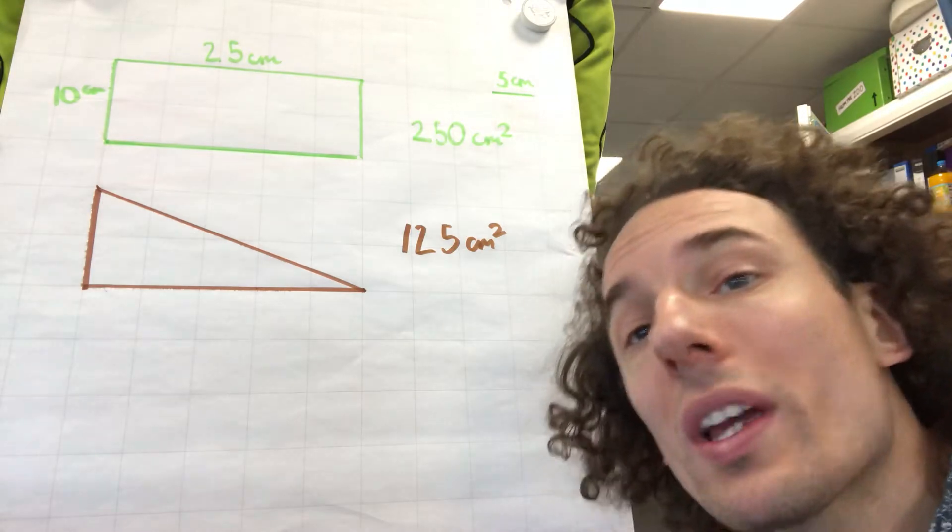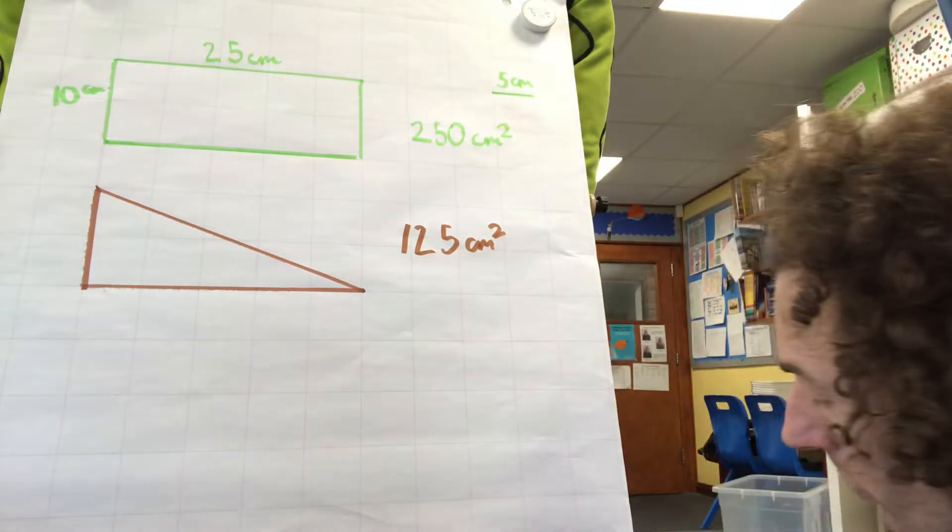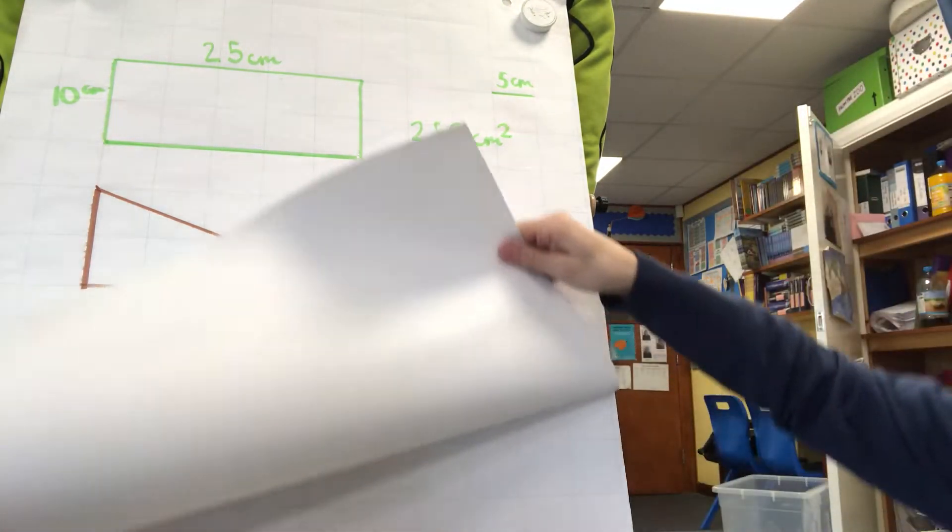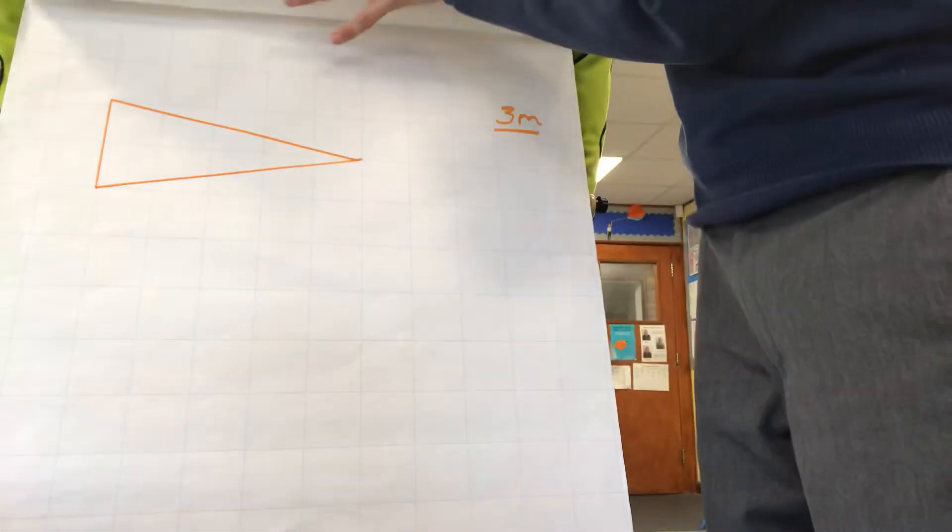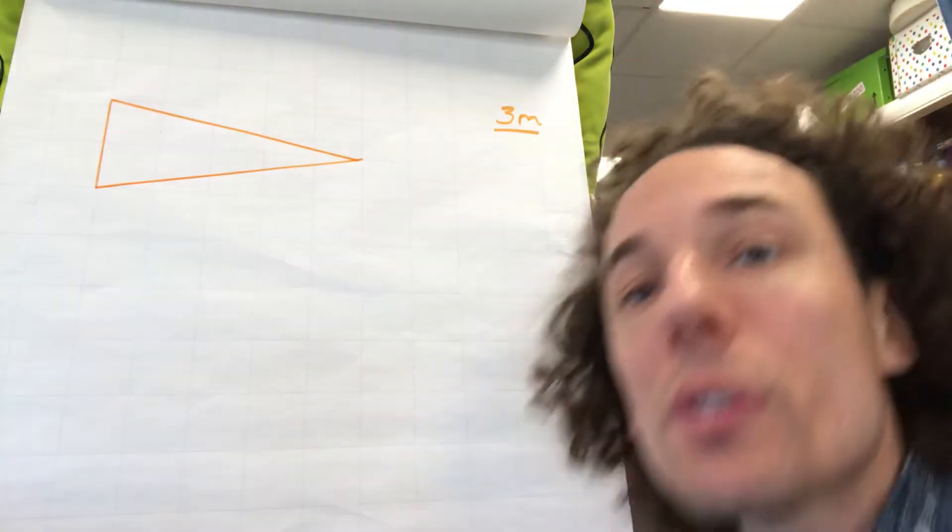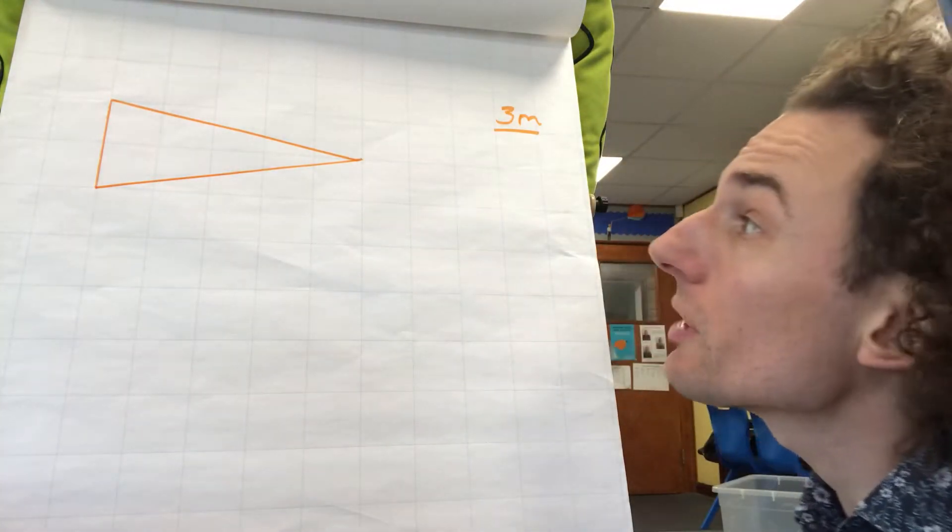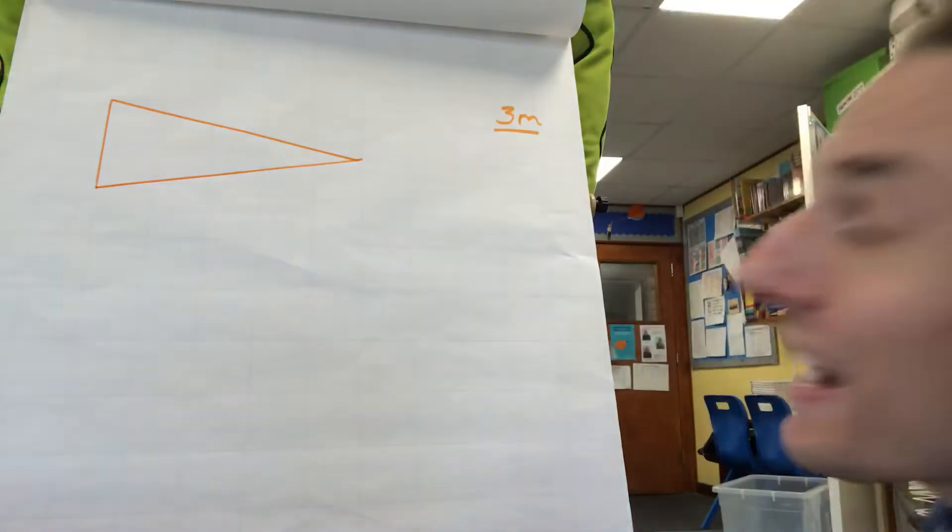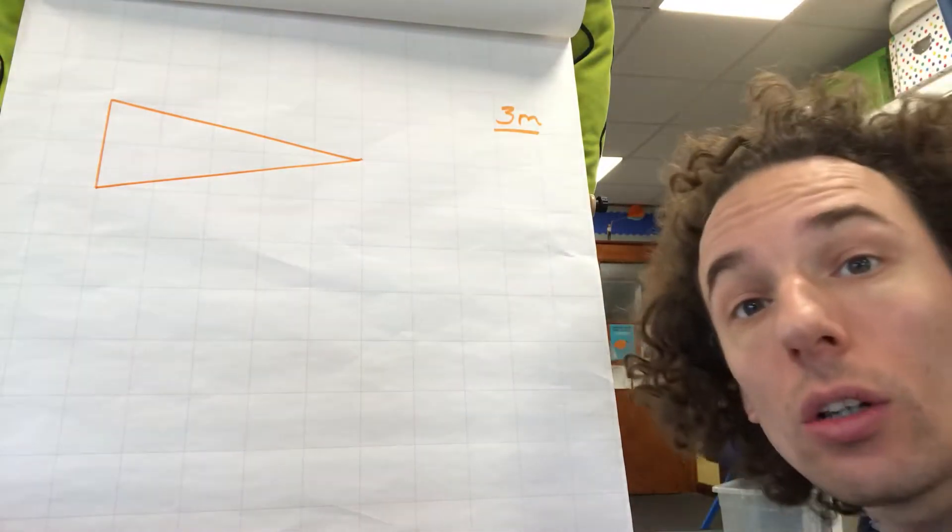Now, you might not always have an accompanying rectangle. So in that case, what you would do, as we were training ourselves on Friday, is create a rectangle around your triangle.